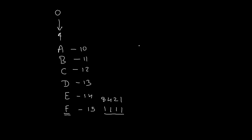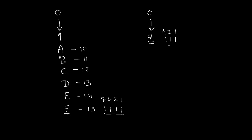Now let's talk about octal numbers. There are total 8 digits in the octal number system, from 0 up to 7. The largest possible octal digit is 7. Using the 421 technique: 4+2=6, 6+1=7. So to represent the largest octal digit 7, we require only 3 binary digits. We will keep this in mind while doing the conversion.